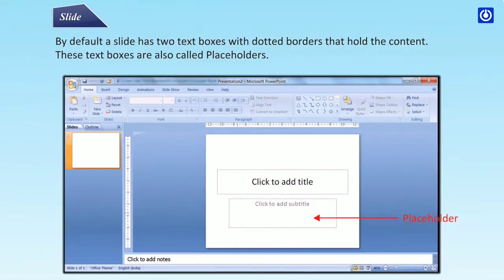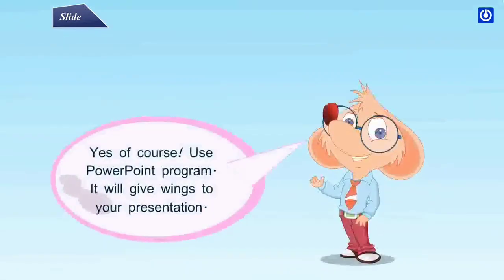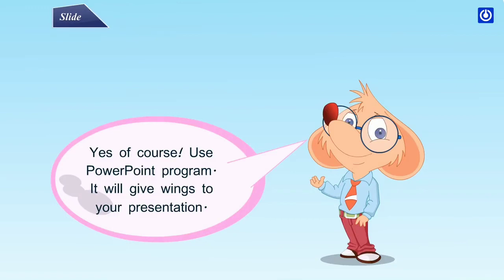These text boxes are also called placeholders. When you change a slide layout, it shows various content options. By clicking on the respective icons, you can add a picture, table, chart, and the likes.